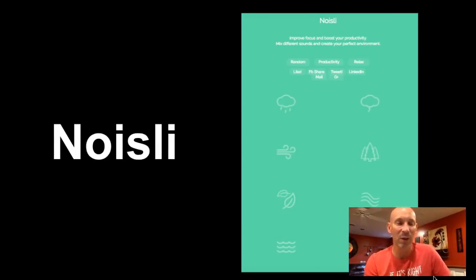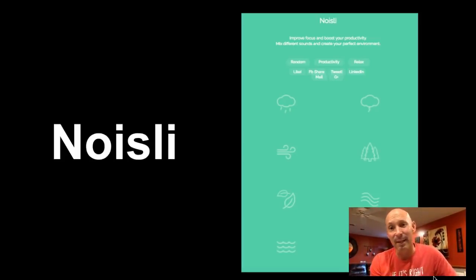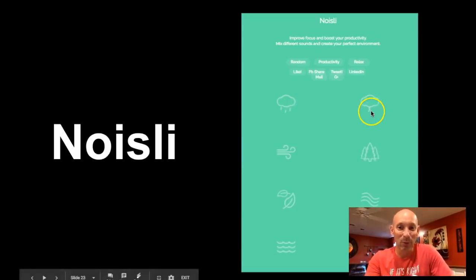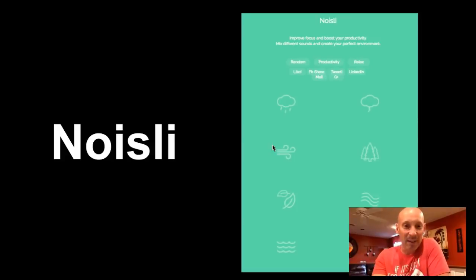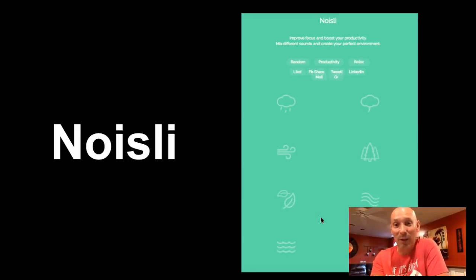Noisily — do you play music in your classroom? Sometimes it's hard to know what to listen to. Try Noisily. You can see the setup right here: a thunderstorm, light, thunder, wind and tree sounds. You can actually tell it 'I want to be productive today' and it will mix something up for you, or you can design your own soundscape. When kids walk in you might have a thunderstorm playing. There's even a coffee shop option that gives you that white noise feel of being in a coffee shop.